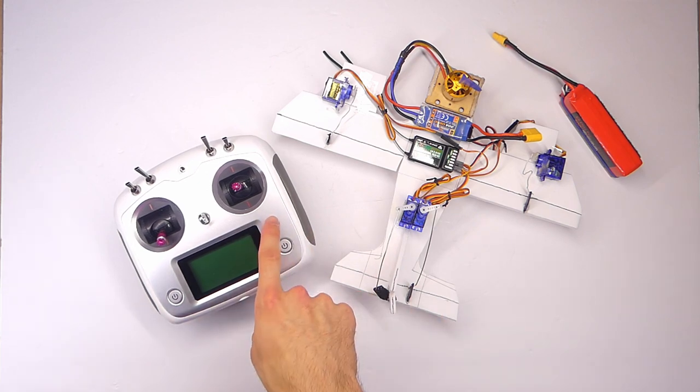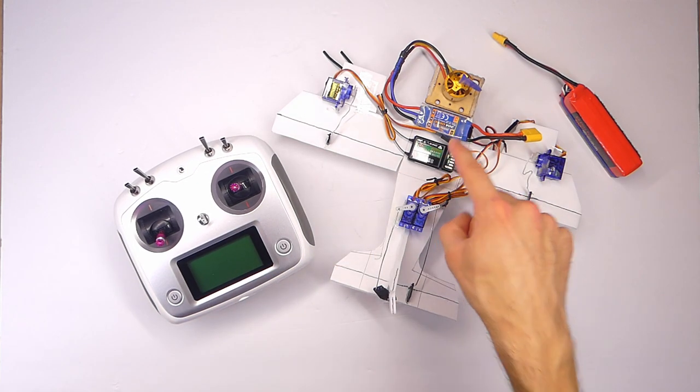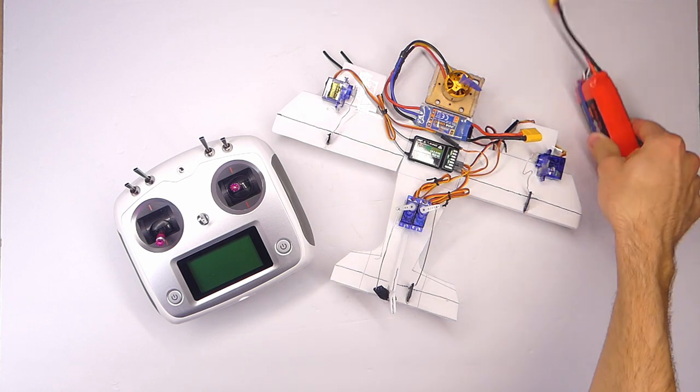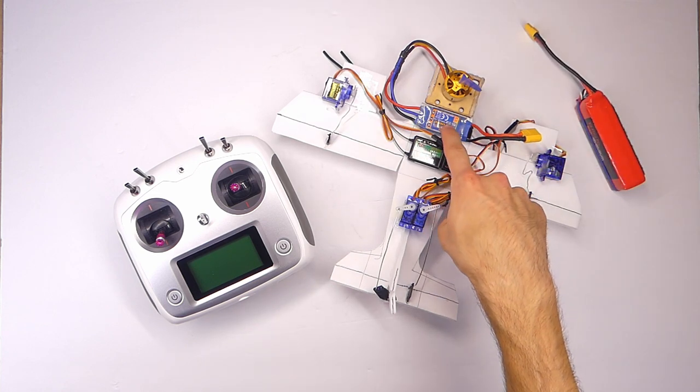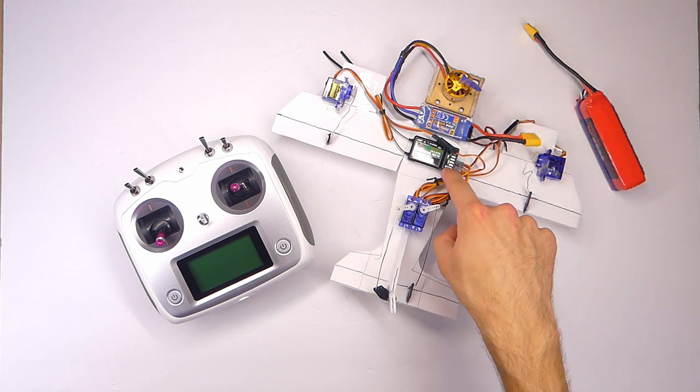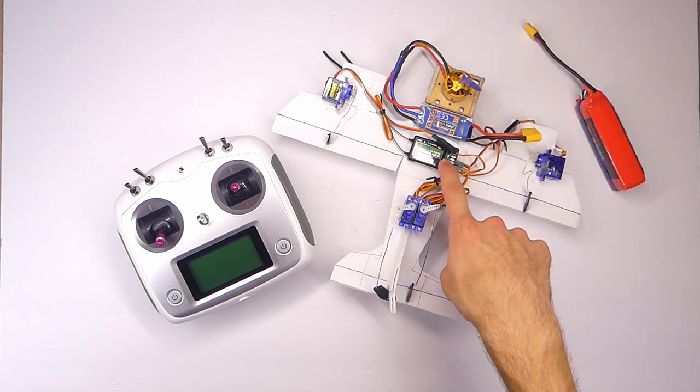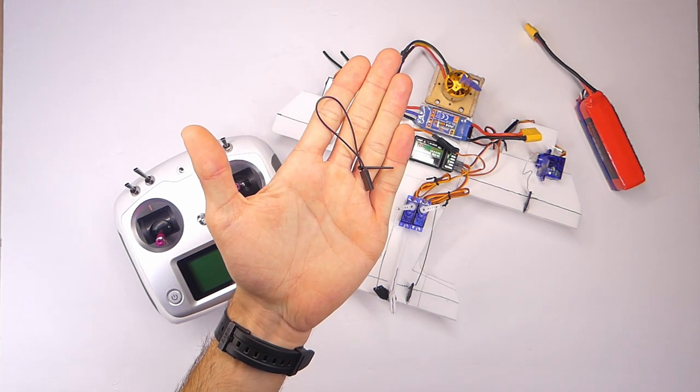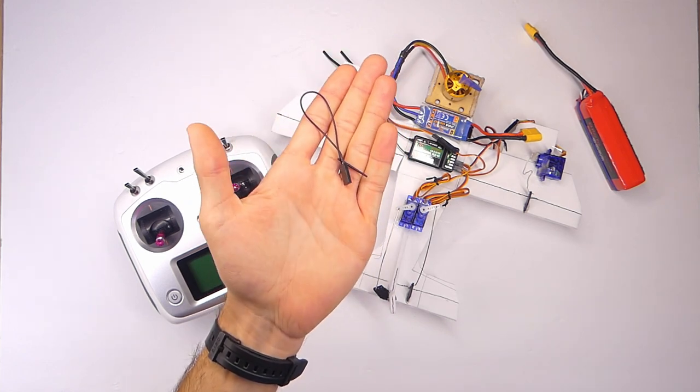So you're going to need a transmitter, a receiver, a battery, and probably an ESC to connect your battery to your receiver to power it, and you'll need a binding plug or bind key.